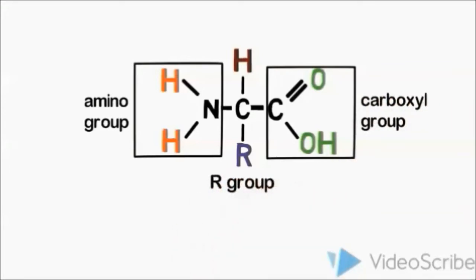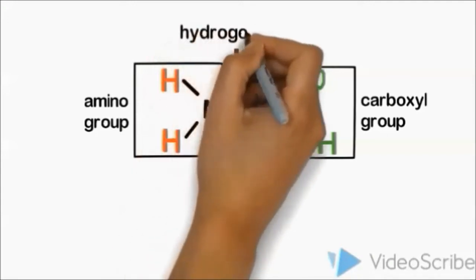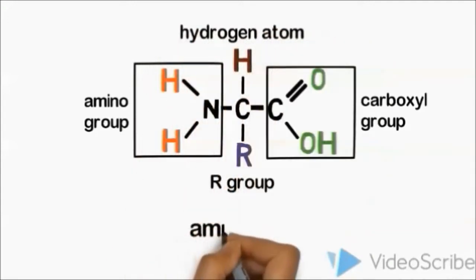Amino acid is an amphoteric because it contains acidic and basic groups.